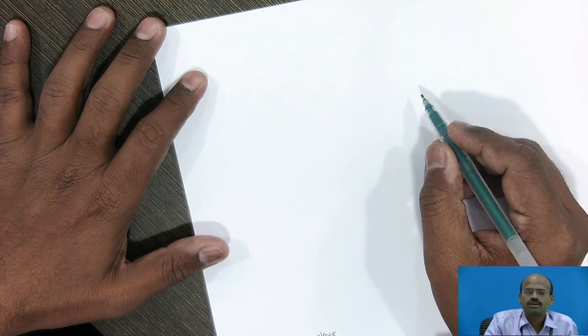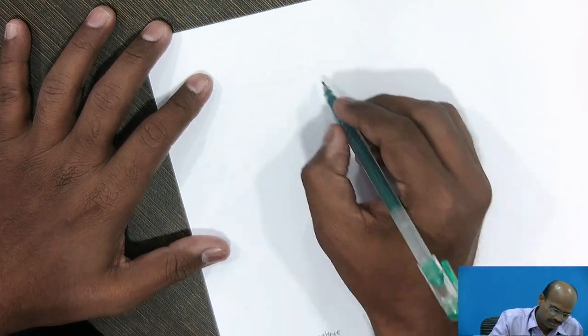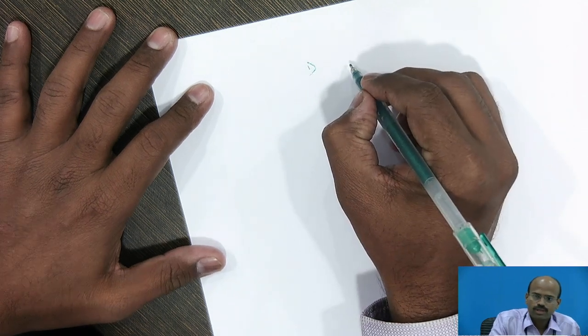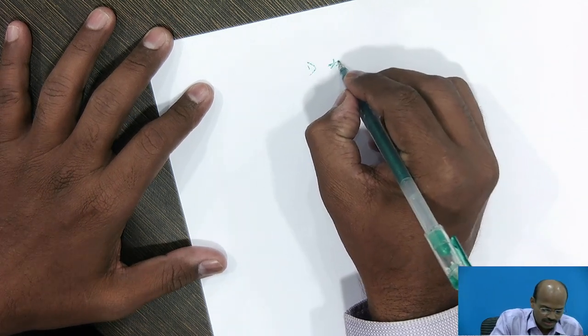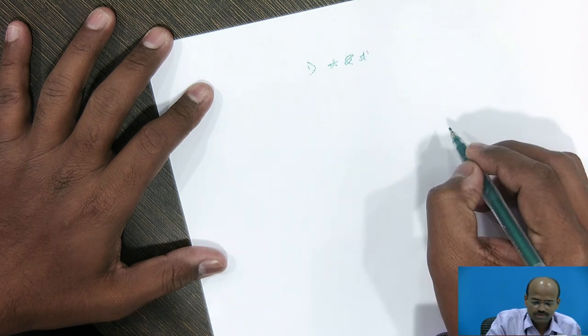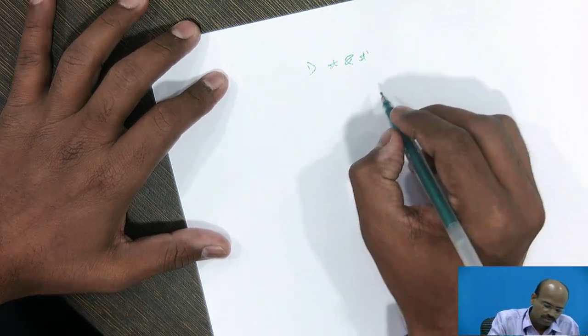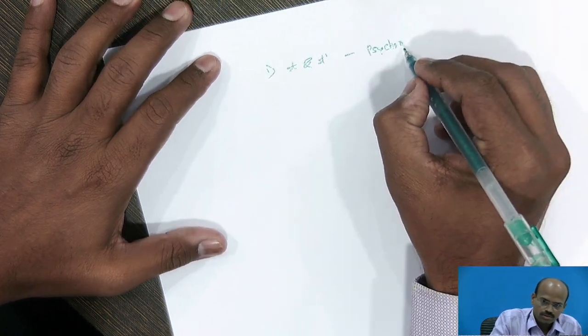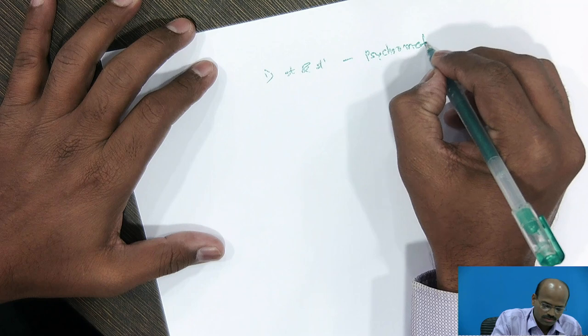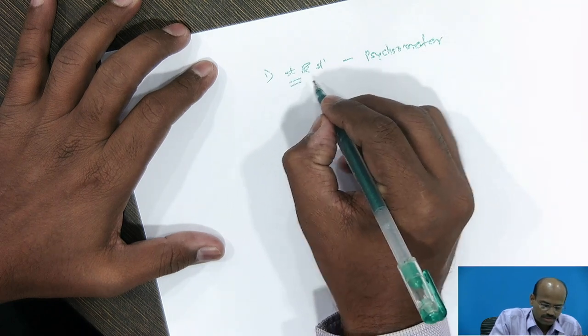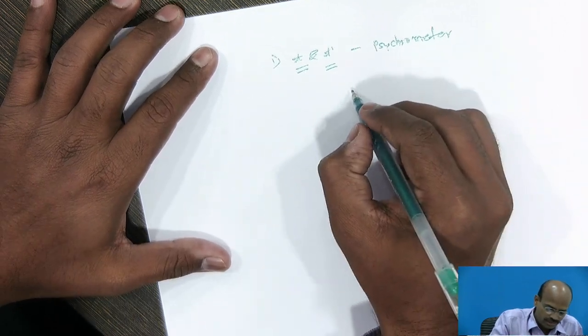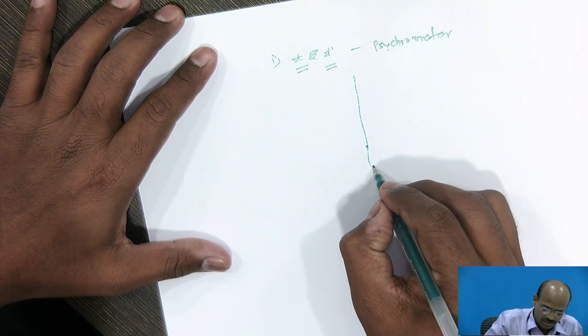Next, is numericals on psychrometry. Here, there are two types of numericals. In first category, they will be giving dry bulb temperature and wet bulb temperature. By using the psychrometer, we can obtain dry bulb temperature and wet bulb temperature.